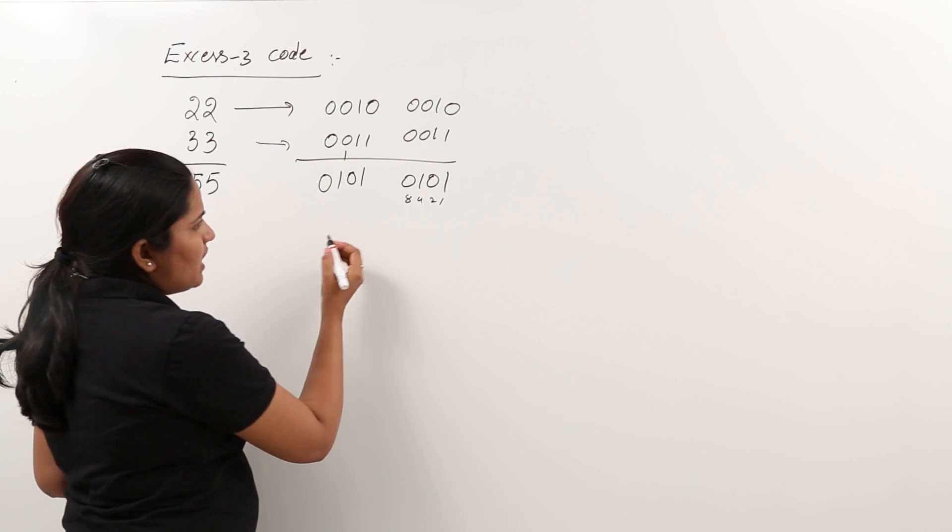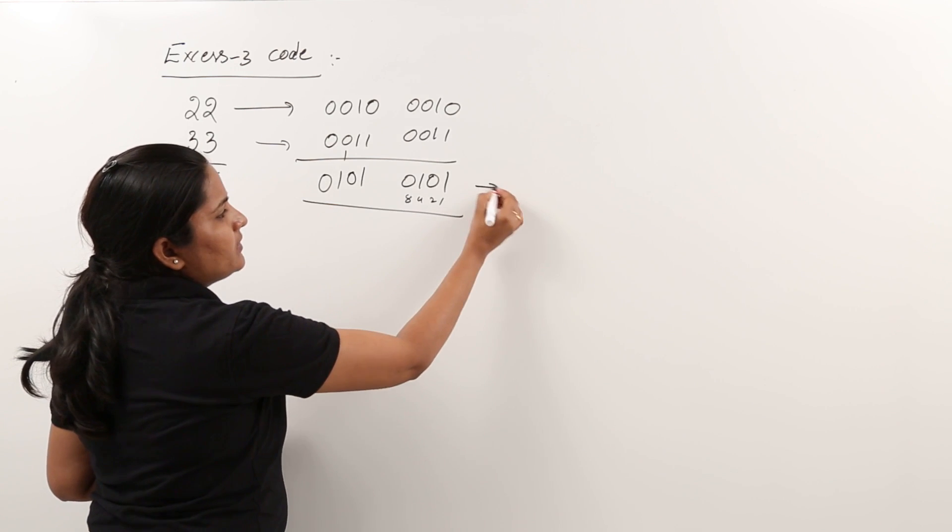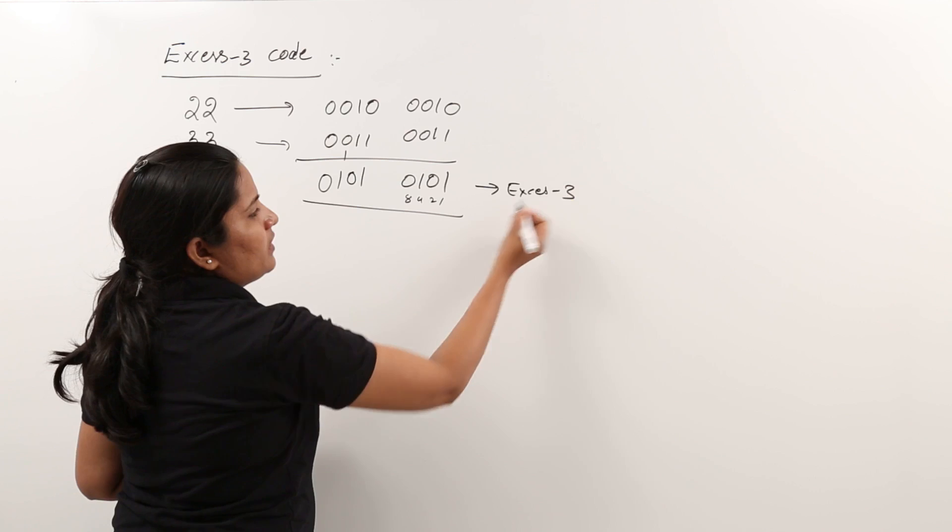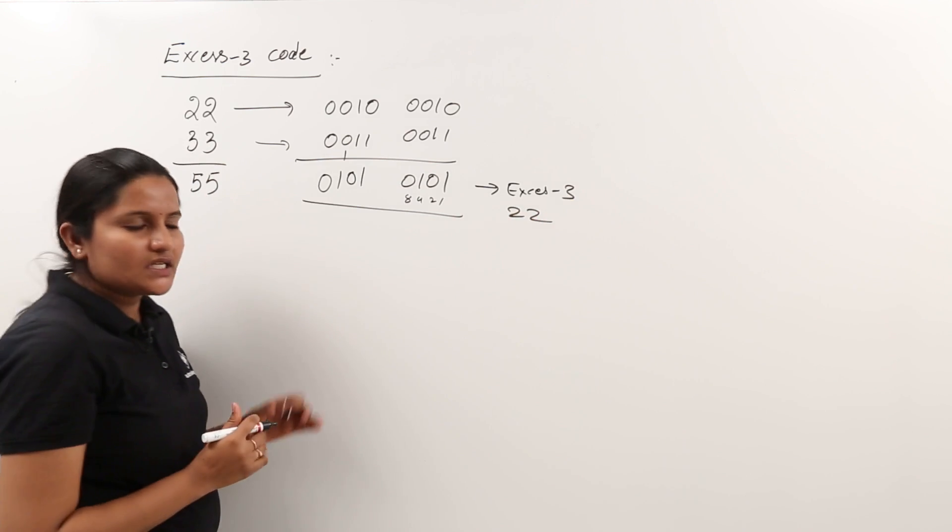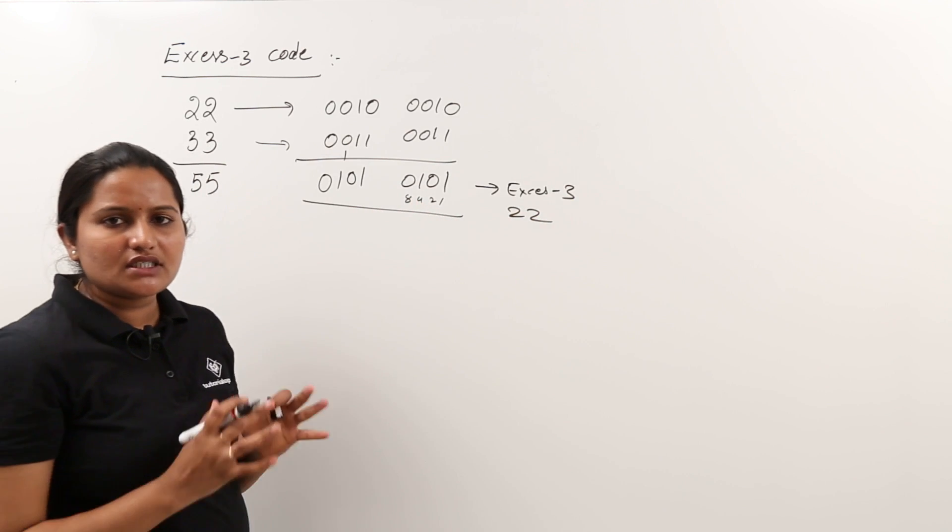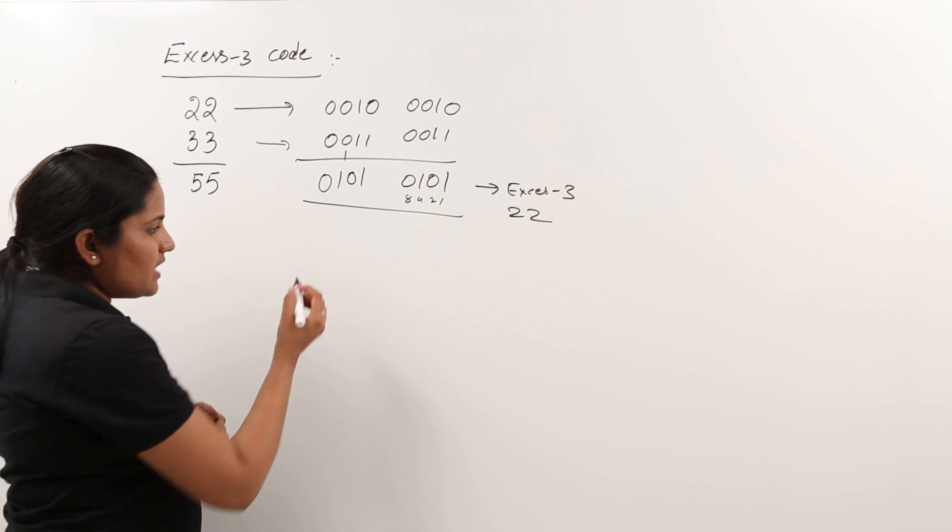For example, anyone asks you, this is the XS3 code for 22. This is the XS3 code for 22. Just we need to add 3, that's it.